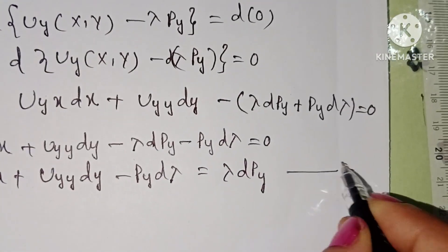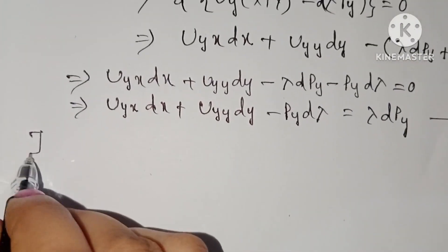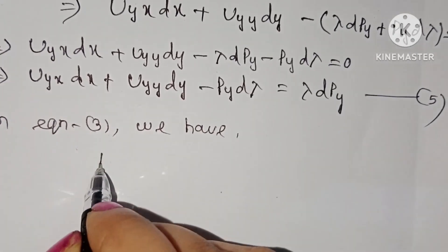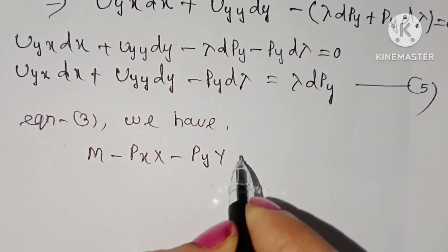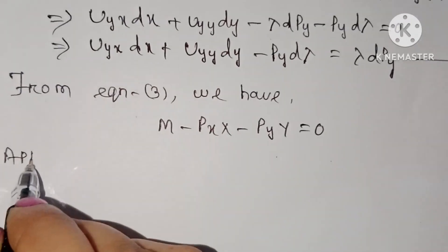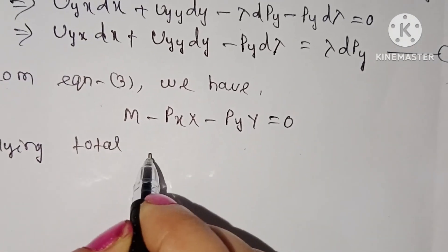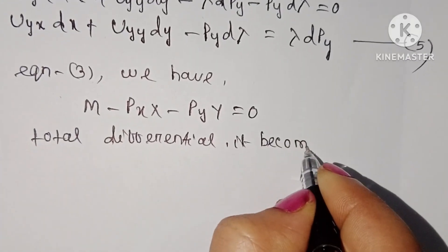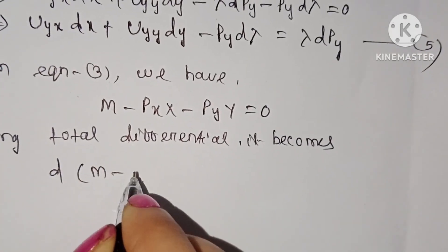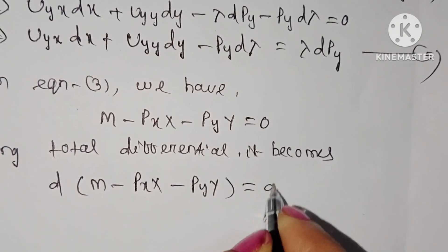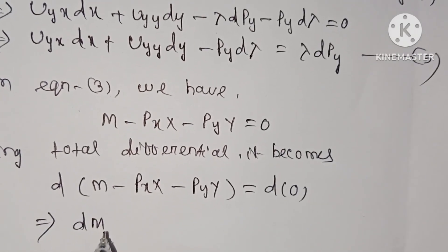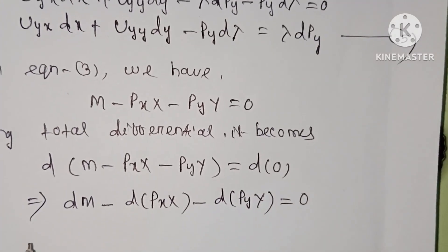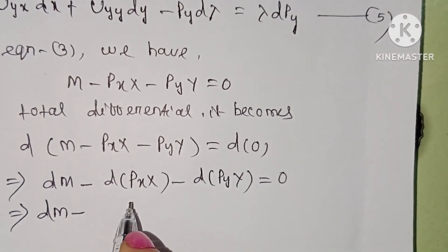From equation three, we have m minus px·x minus py·y equal to zero. Applying total differential, it becomes d(m minus px·x minus py·y) equal to zero, which gives dm minus d(px·x) minus d(py·y) equal to zero.